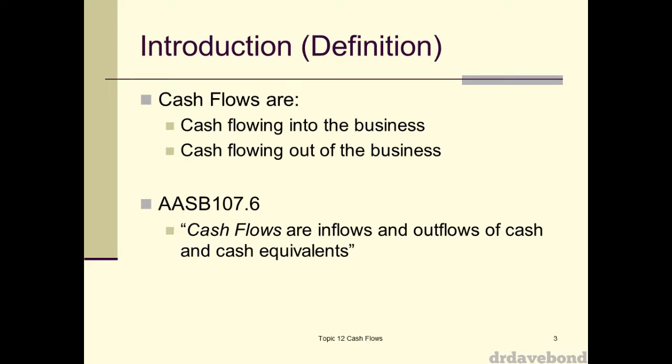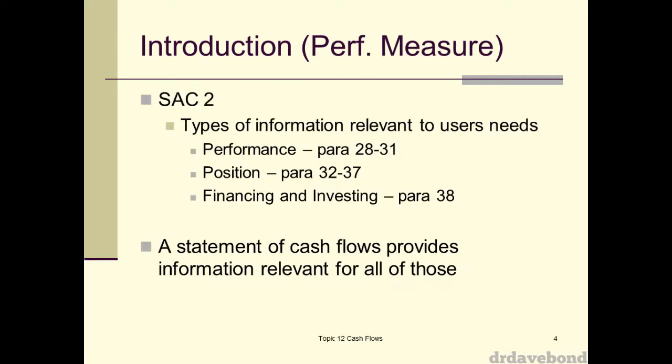Cash flows, according to paragraph six, are simply inflows and outflows of cash and cash equivalents. It sounds pretty straightforward — it's a cash flow, and it's an inflow or an outflow. Cash is relatively straightforward; cash equivalents we'll have a look at. That's still relatively straightforward at this point.